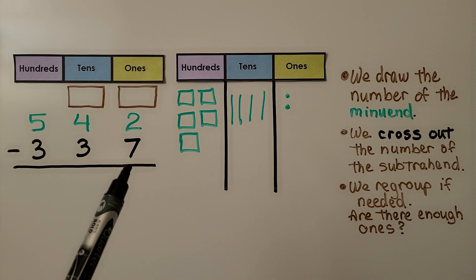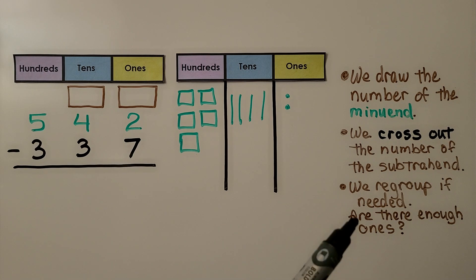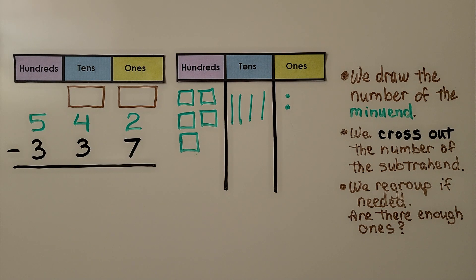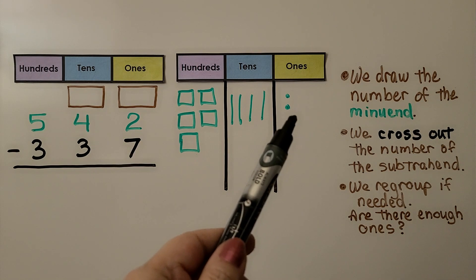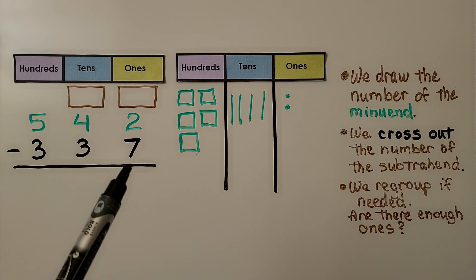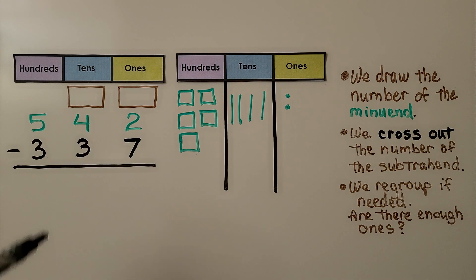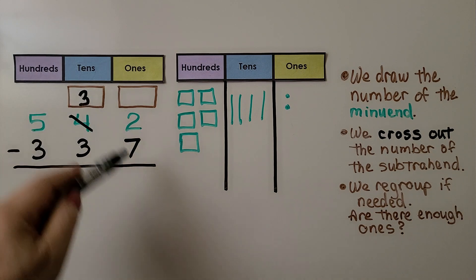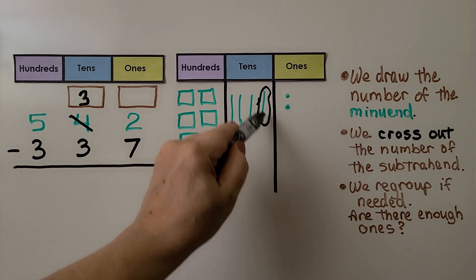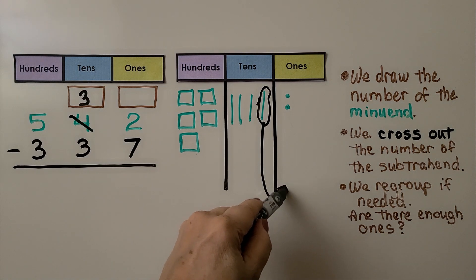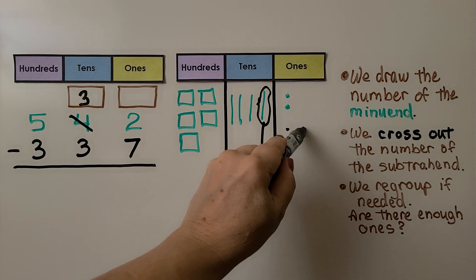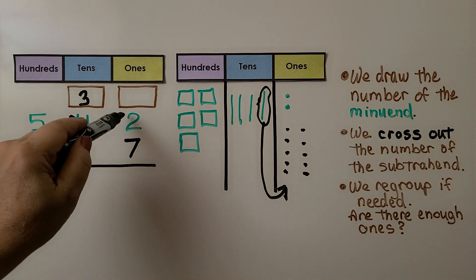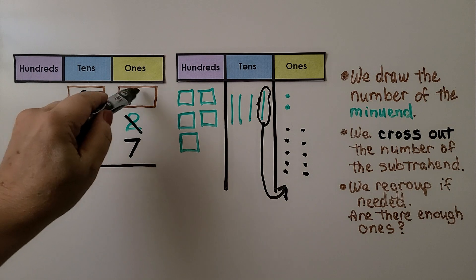The very first thing we do is look at the ones place and ask ourselves, are there enough ones? We have two ones and we need to take seven away — no, we can't take seven away from two. So we need to regroup from the tens place. This four tens is going to become three tens, and we're going to put ten ones over here. That means instead of two ones, we have twelve ones.